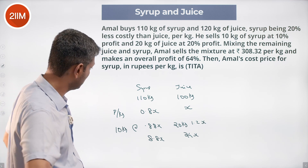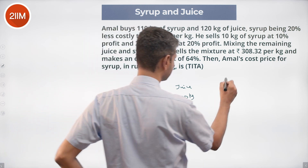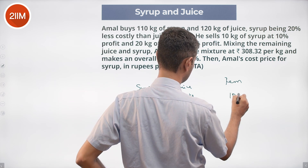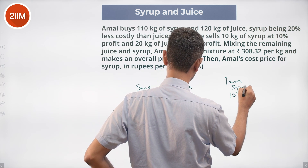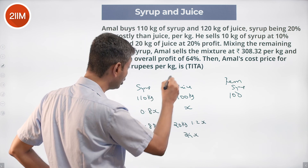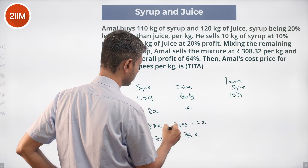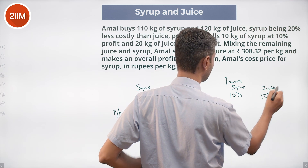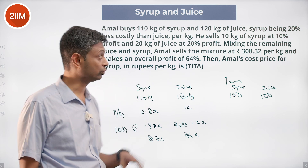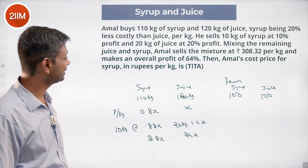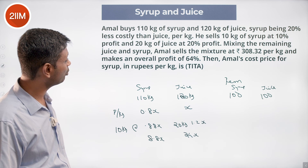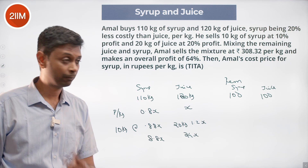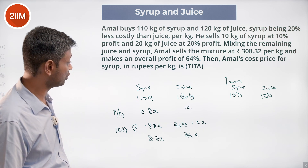Mixing the remaining juice and syrup: from 110 kg of syrup he sold 10, so he has 100 kg remaining. From 120 kg of juice he sold 20, so he has 100 kg remaining. So 100 kg of syrup and 100 kg of juice are mixed and sold at 308.32 per kilogram, making an overall profit of 64%.